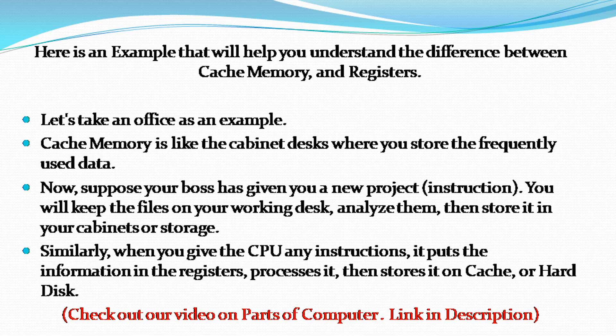Here is an example to help you understand the difference. Let's take an office as an example. Cache memory is like the cabinet desks where you store frequently used data. Suppose your boss has given you a new project instruction — you will keep the files on your working desk, analyze them, then store them in your cabinets or storage. Similarly, when you give the CPU any instructions, it puts the information in the registers, processes it, then stores it on cache or hard disk.